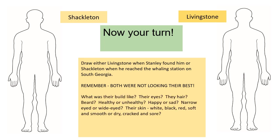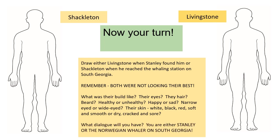What was their build like? Their eyes, their hair, their beard. Were they healthy or unhealthy? Happy or sad? Narrow-eyed or wide-eyed? If you're narrow-eyed, usually you're quite angry; if you're wide-eyed, you're excited and happy. What about their skin — was it white, red, soft, smooth, dry, cracked, sore? What dialogue will you have? You are Stanley or the Norwegian whaler on South Georgia, so I want some dialogue — what are you going to say and what did they say back to you?